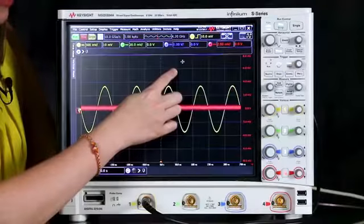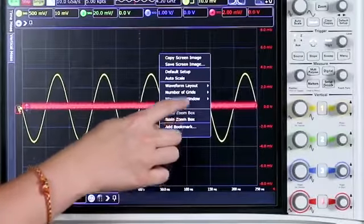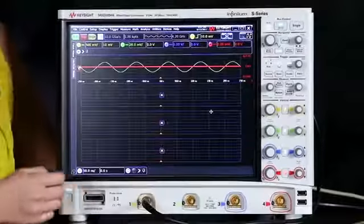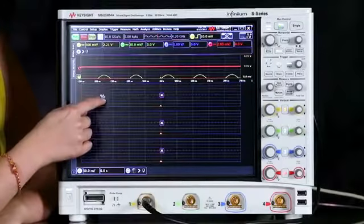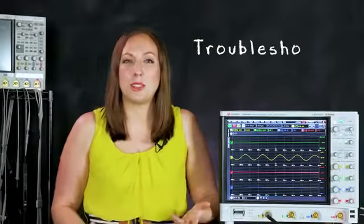We can also view these waveforms separately in their own grids. So we'll right-click and then we'll choose number of grids and we'll select four. And we can drag and drop each of the waveforms to its own separate grid. Now we're ready for viewing our waveforms and doing basic troubleshooting.